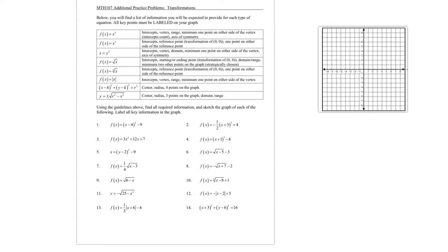So anytime you're dealing with a parabola or a quadratic function, the professor wants the intercepts, the vertex, the range, and a minimum of one point on either side of the vertex. These are all the criteria we need to answer for each situation, and the criteria for each different graph is slightly different.